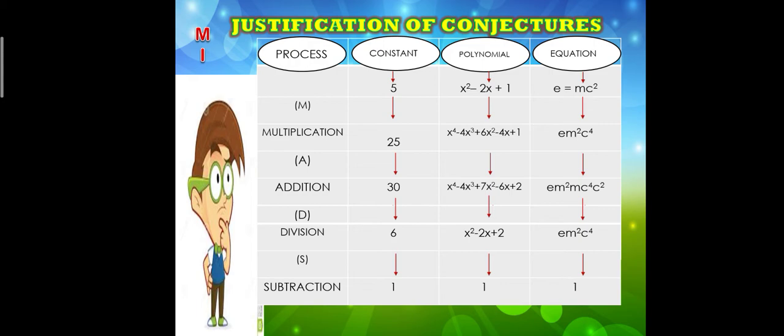As you have seen in the previous slides, we are giving other examples other than that. So the process is the same: MADS - multiplication, addition, division and subtraction. Giving samples to constant which is the 5, a polynomial which is x squared minus 2x plus 1, and an equation E equals MC squared equation for light.